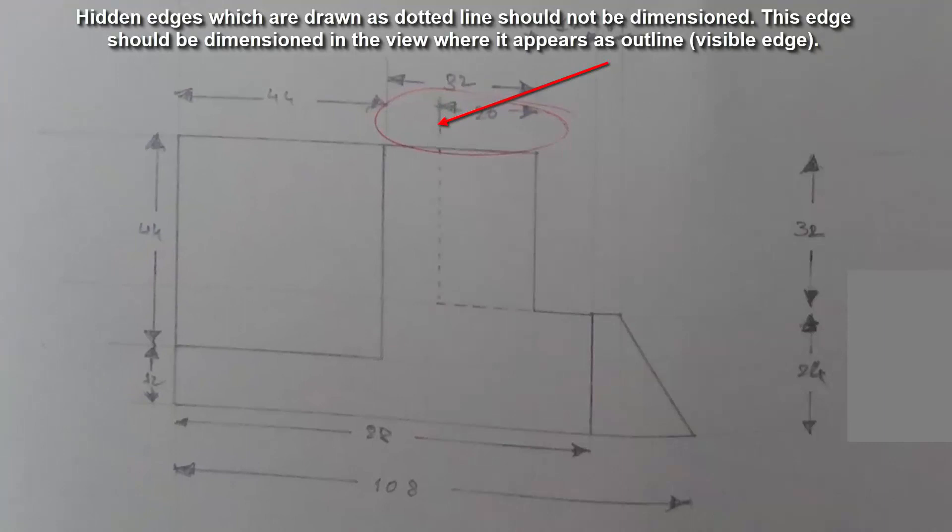Hidden edges which are drawn as dotted lines should not be dimensioned. This edge should be dimensioned in the view where it appears as outline or as visible edge.